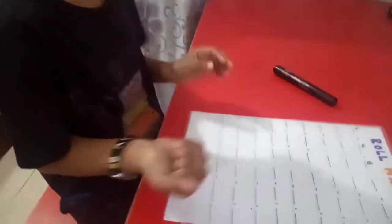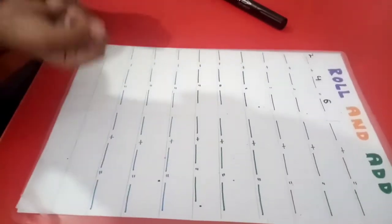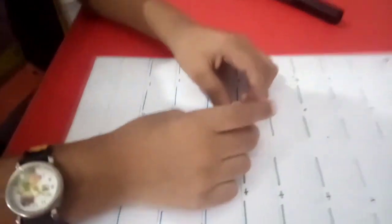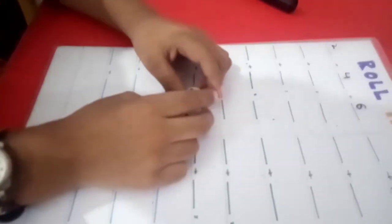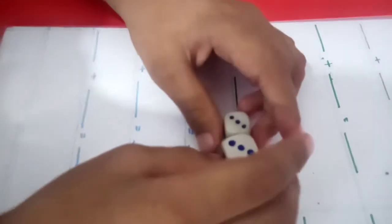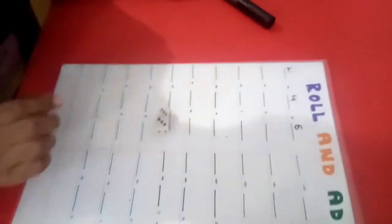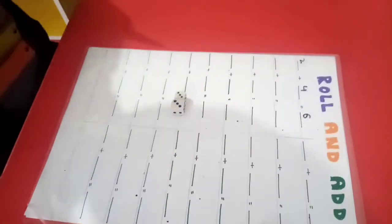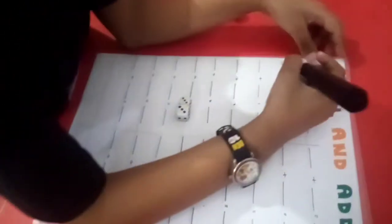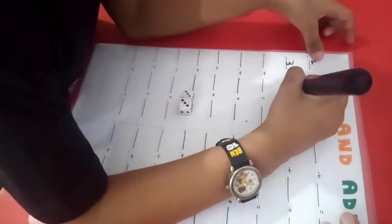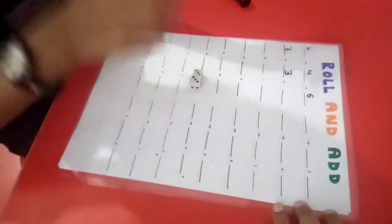Get on, roll the dice. What comes? 3 and 3. Now write down 3, 3, 3, yes, 3. 3, now count the total.